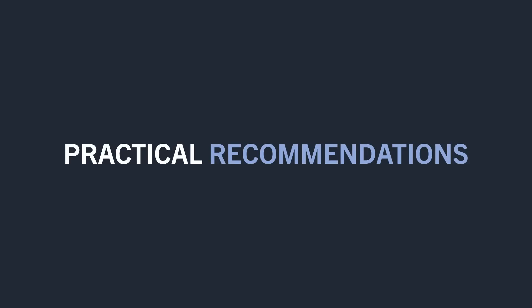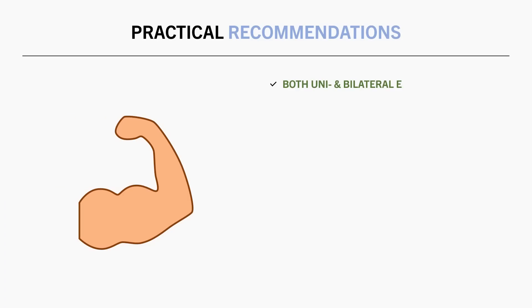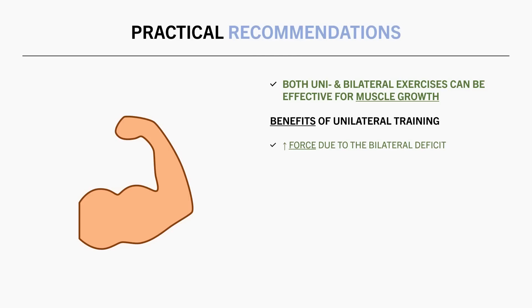So based on all this information let's establish some practical recommendations. First it should be understood that muscle growth can be effectively achieved using both bilateral and unilateral exercises. However each form of exercise may have slight benefits over the other. Unilateral exercises may allow higher total force production compared with bilateral training due to the bilateral deficit phenomenon. Unilateral training also usually provides movement through more planes of motion which can help to target a muscle based on what movements the muscle fibers produce. Furthermore unilateral exercises can sometimes allow us to train a muscle through a larger range of motion than what can be achieved with bilateral exercises.